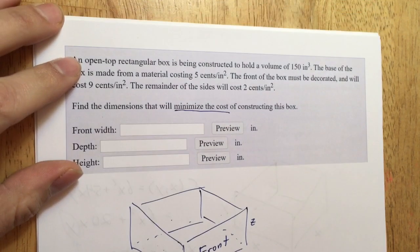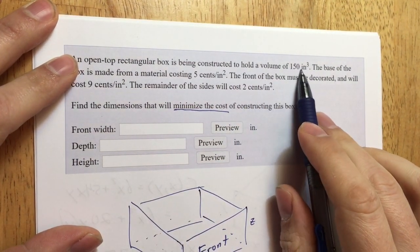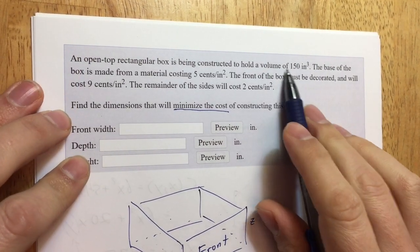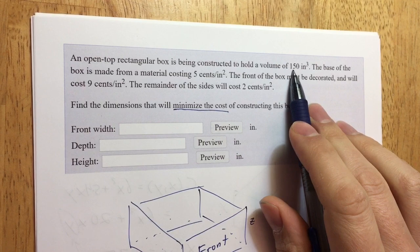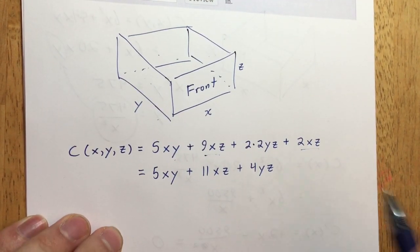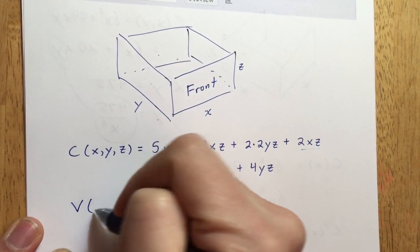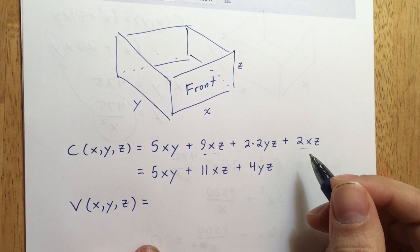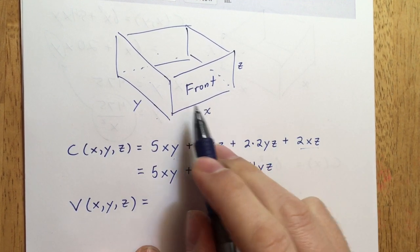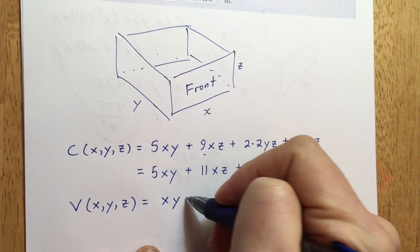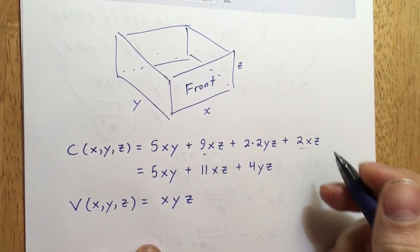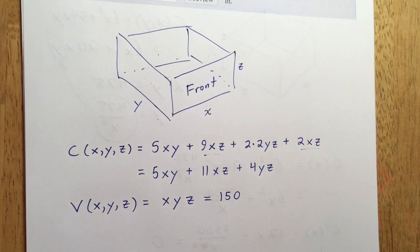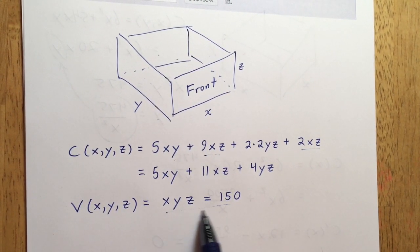We're minimizing this cost subject to a constraint: the box has to hold a volume of 150 cubic inches. The volume function is V(X, Y, Z) = XYZ, and we set it equal to 150. So the constraint equation is XYZ = 150.